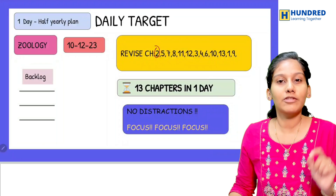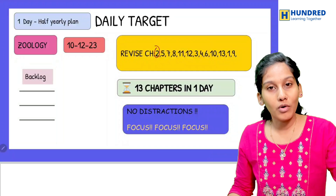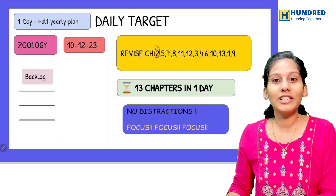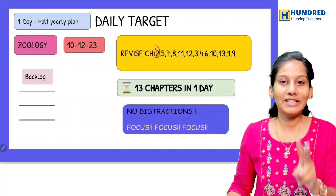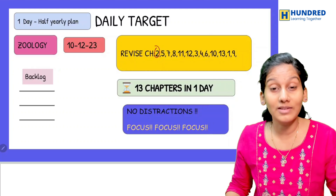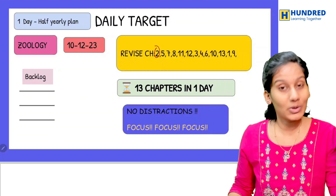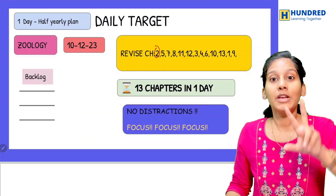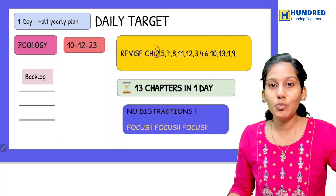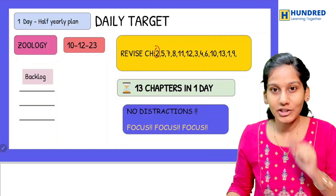First, we will cover the structure of human sperm, uterus, ovum, etc. Then we will cover molecular genetics as well — topics like transcription, translation, and the human genome project. These are very important questions. Then we will cover human health and disease and immunology — these are two super important chapters.